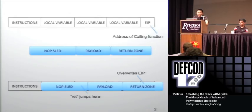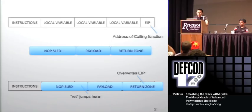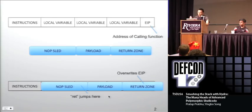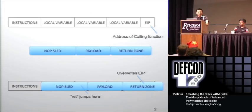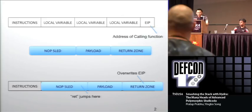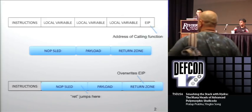So basics: smashing the stack. This is from Aleph One's seminal paper in Phrack. This is the stack frame when you call a function. You have the EIP, which is the address of the function that called — this is what we return to. It sets up local variables. If you don't have bound checking, you can send a simple exploit with a no-op sled, payload, and return zone. The return zone overrides the EIP, and when the function calls return, it jumps into the no-op sled and passes into the payload. You basically lose the execution context of your program to whatever the attacker sent.